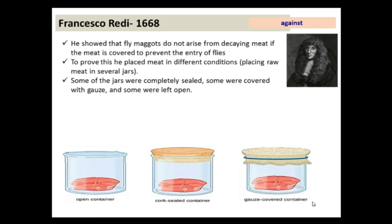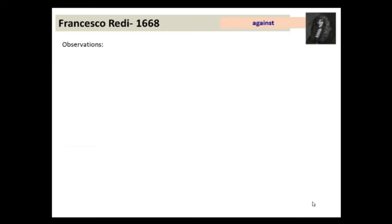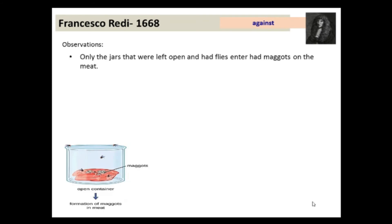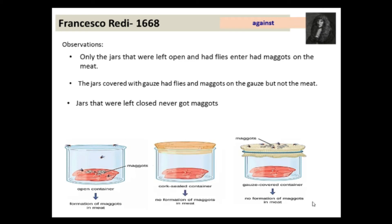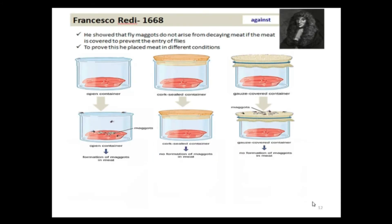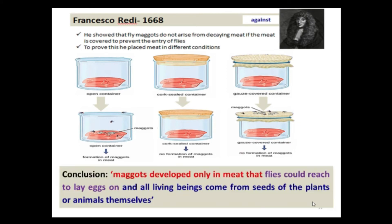In the third condition, meat was placed in a container covered with gauze that allowed air but not flies. Redi observed that only jars left open with flies ended up with maggots on the meat. Jars covered with gauze had flies and maggots on the gauze but not on the meat. Jars left closed never got maggots. He concluded that maggots developed only in meat that flies could reach to lay eggs on, and all living beings come from seeds of plants or animals themselves.